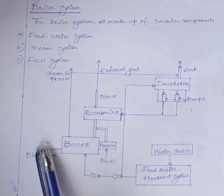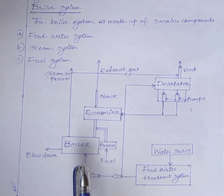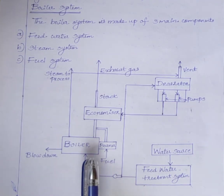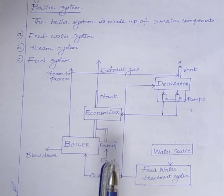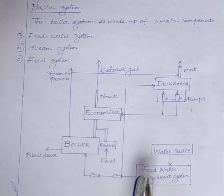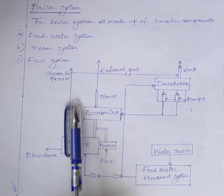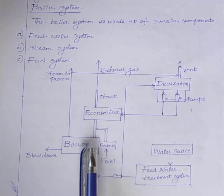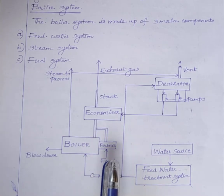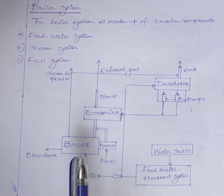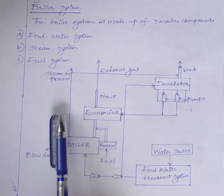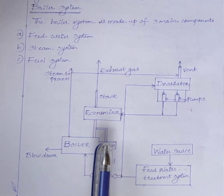We know that boiler is a closed pressure vessel constructed of steel or iron where water is converted into steam by the application of heat. Therefore we can say that the boiler converts water into steam or hot water.